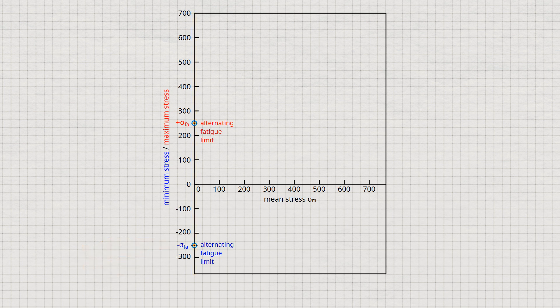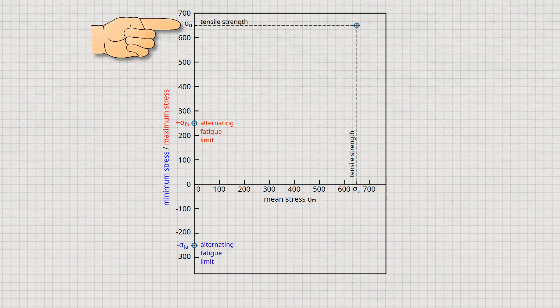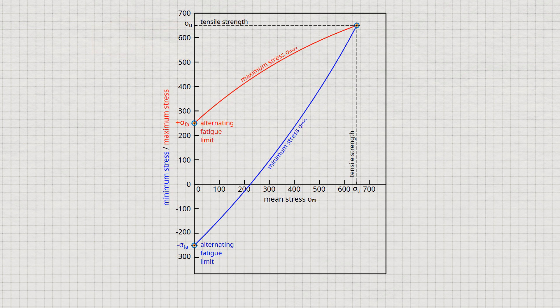Another point results when the mean stress just reaches the ultimate tensile strength. In this case, the sample can no longer withstand a stress amplitude, as otherwise the tensile strength would be exceeded. Consequently, when the stress amplitude is zero, the maximum and minimum stresses are identical and equal to the tensile strength. This means that the curves for the maximum and minimum stress must run to this point starting from the points of alternating fatigue limit. In reality, the two lines are slightly curved, and between these curves lies the area of fatigue endurance, marked in green in the diagram.